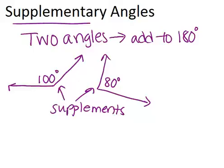There is one common place that you will see supplementary angles, and that is when you have a straight line. You might remember that a straight angle is 180 degrees, so this line, if you think of it as a straight angle, is 180 degrees.